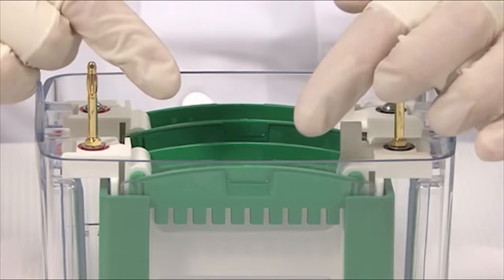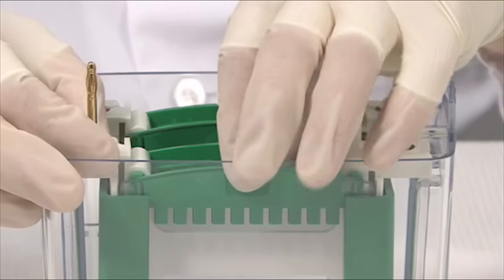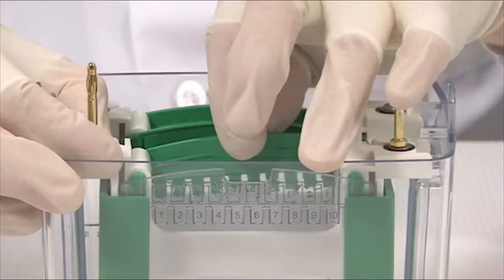Next you want to remove the comb from your TGX gel. Locate the notch in the middle of the cassette, grasp the comb from the center, and lift straight up and out.